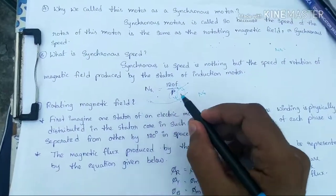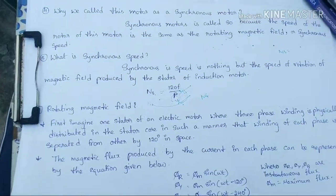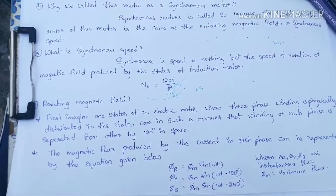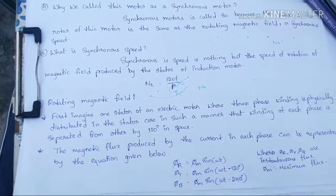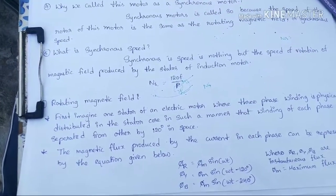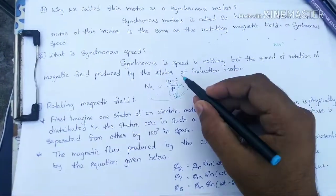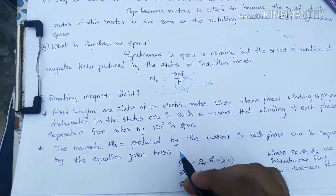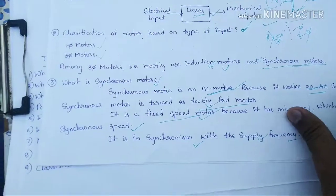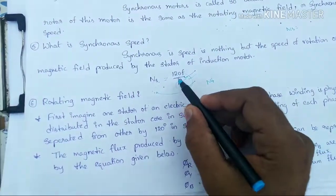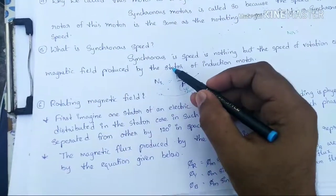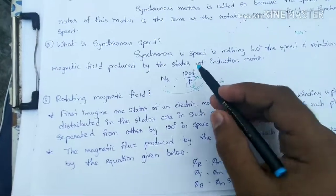The synchronous speed is directly proportional to the supply frequency — if frequency increases, speed increases; if frequency decreases, speed decreases. The synchronous speed is inversely proportional to the number of poles — if poles increase, speed decreases. The number of poles in a given motor is fixed and constant.